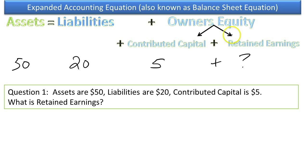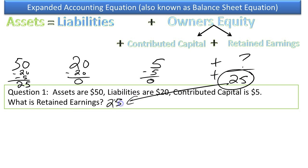In order to get retained earnings by itself on this one side, we've got to deduct contributed capital and liabilities from both sides. If you do that, 50 minus 25, 25, 0, 0, and therefore retained earnings must be 25. There's your answer. That's an example of an Expanded Accounting Equation problem.